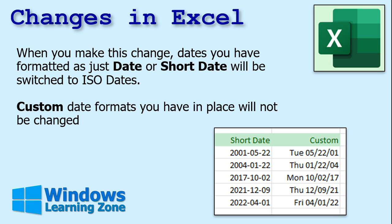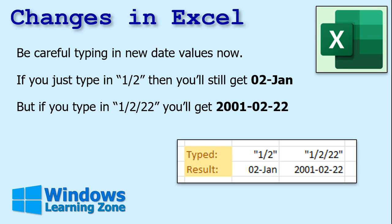Any custom date formats you have in place will not be changed. You can see that a standard date field switched automatically, but a cell with a custom date format kept the way it was. So it won't change any custom-formatted cells. You do have to be careful entering new values — if you just type in 1/2, you're going to get January 2nd, just like you're expecting from the old standard.